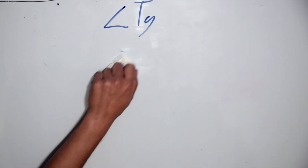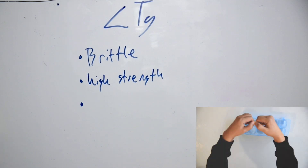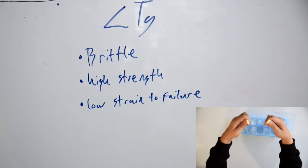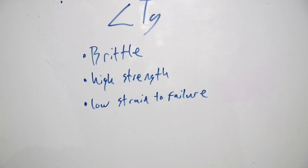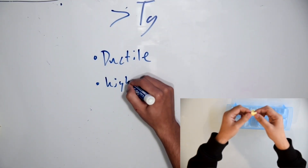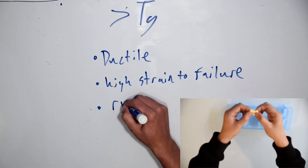Below Tg, the polymer behaves like an eggshell and it breaks directly under a specific load. Above Tg, it is more rubbery and breaks after some deformation.